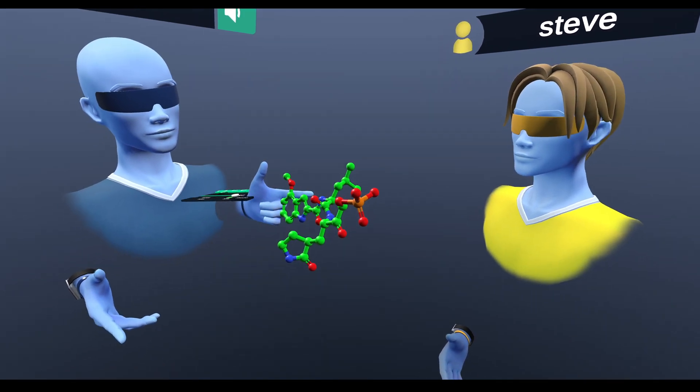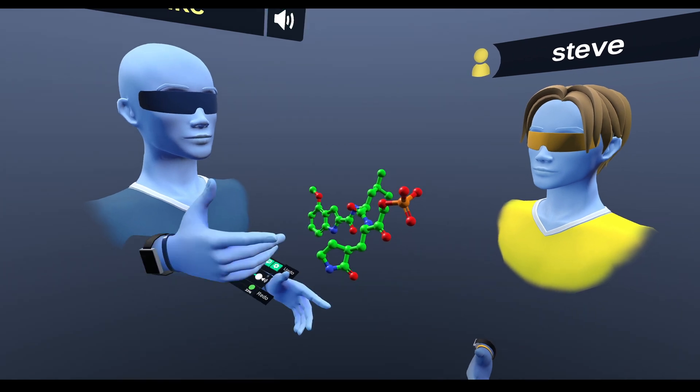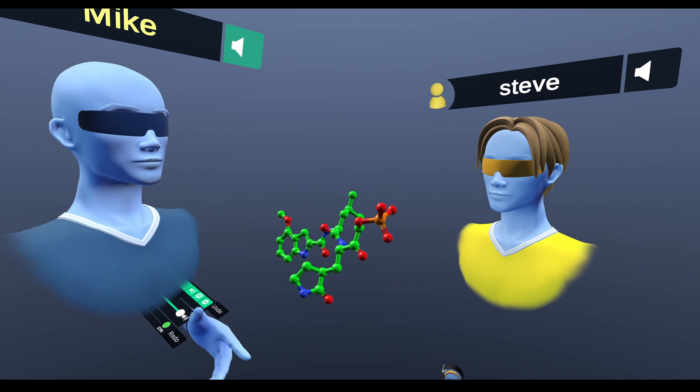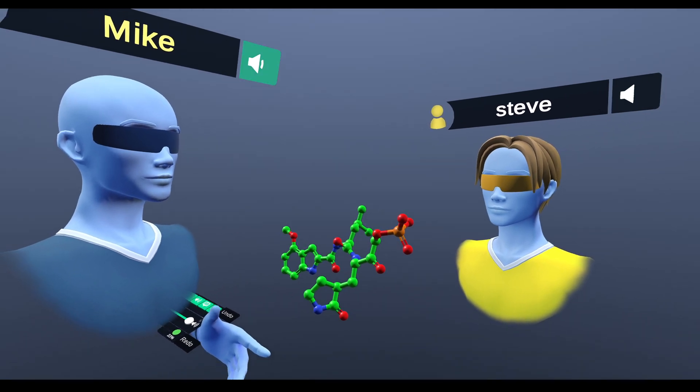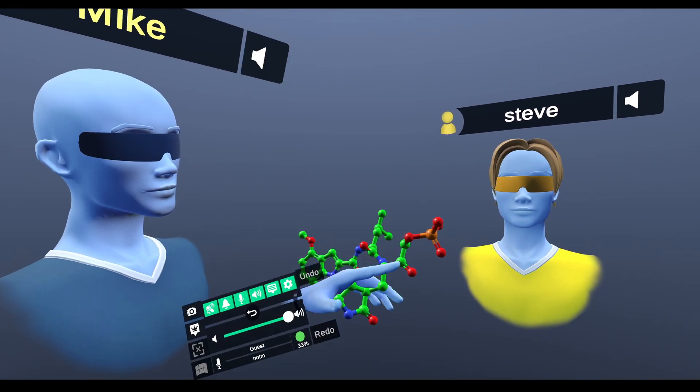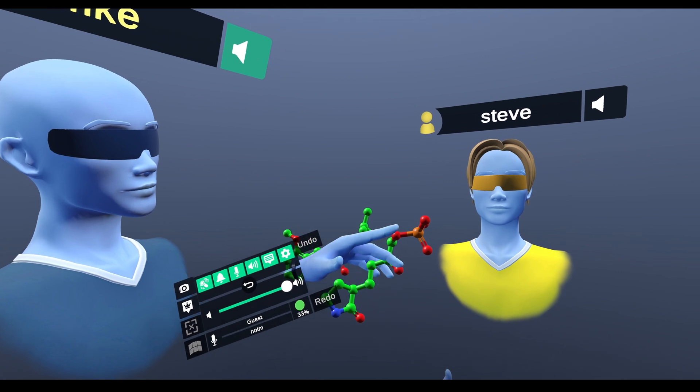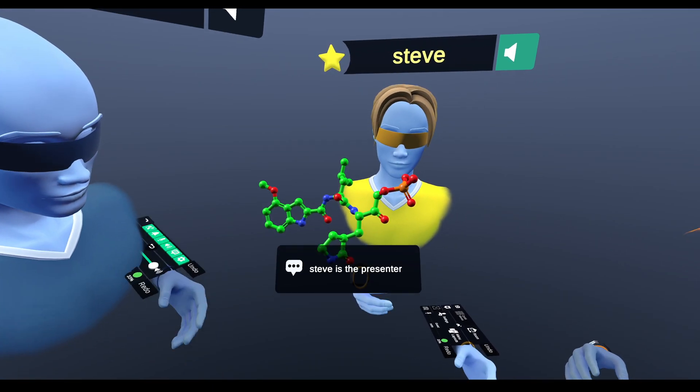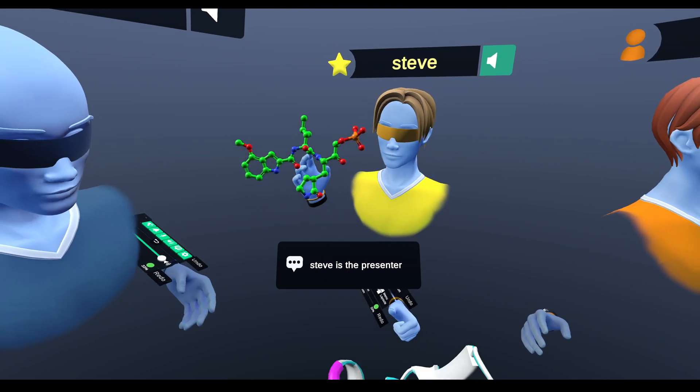But once this compound gets into the body and gets into cells, the phosphate group is cleaved off by the enzyme alkaline phosphatase, and we get the actual drug, the ketone-based inhibitor that has an alcohol here. Let's check that out in the context and look at how it would be in the pocket.